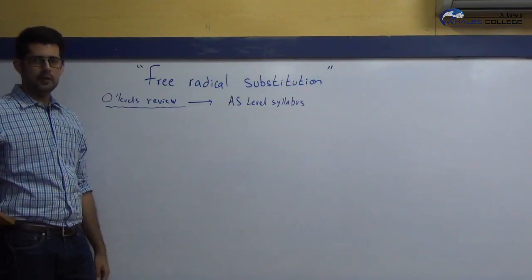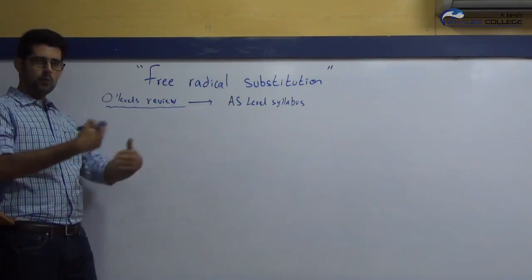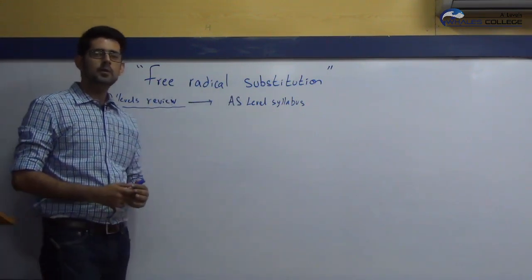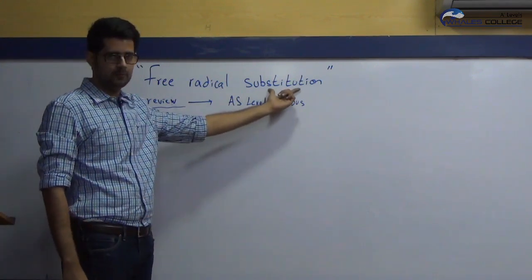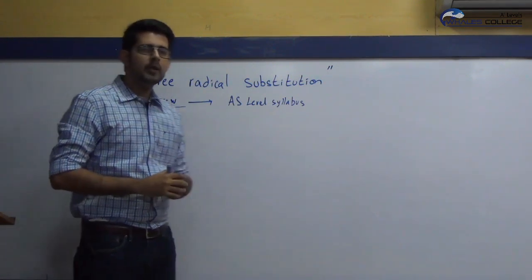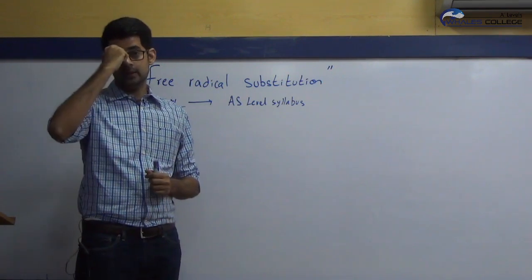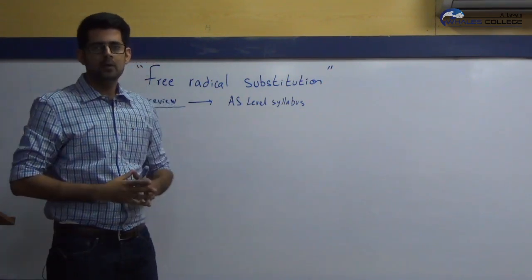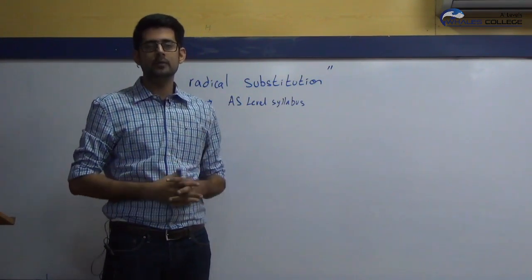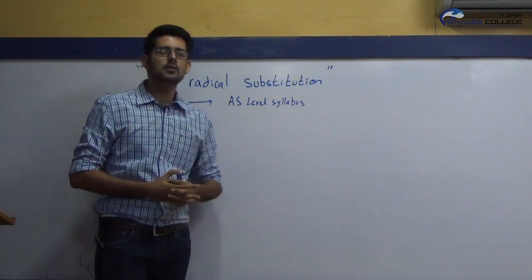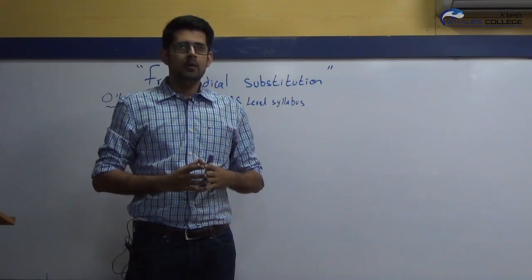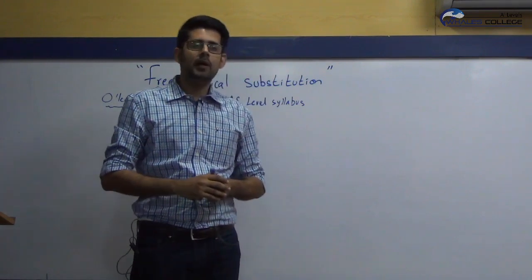We are studying a major reaction of alkanes called free radical substitution, which is more advanced than O level coverage. In O levels it was just labeled as substitution. Substitution means replacing something. In a substitution reaction, alkanes react with halogens, which are group 7 elements, in the presence of sunlight or UV rays because the reaction is a photochemical reaction. In AS level, we will explain why this reaction requires sunlight.